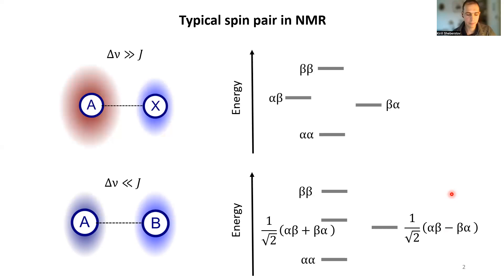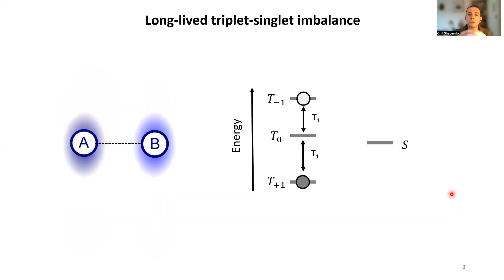This was realized by Malcolm Levitt and his group, and over the last 20 years a whole field of singlet state NMR has emerged. Normally, the memory of spin system is limited by longitudinal relaxation time T1.